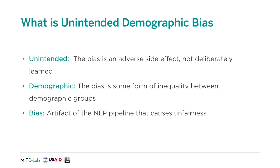In gender-based demographic bias, for example, a machine learning model might associate specific types of jobs with a specific gender simply because that is the way the data used to train the model is distributed.